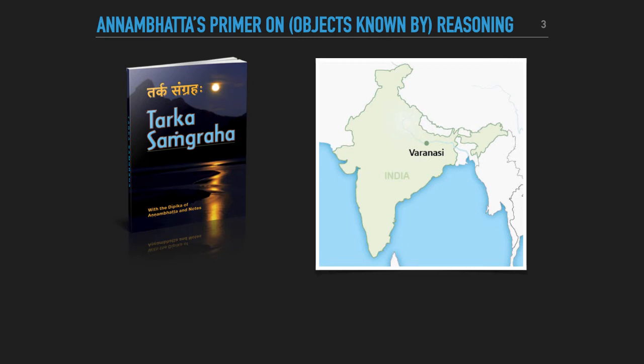So we might think that the focus of the book is epistemology or logic. However, Anambutta himself explains precisely what his purpose in writing this book is, as well as what the title means. He says that the word reasoning, or tarka, is really meant to include also the categories of things that one reasons about.